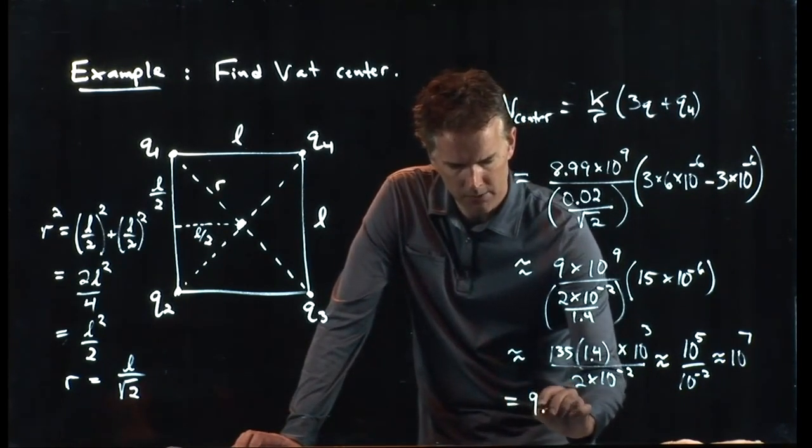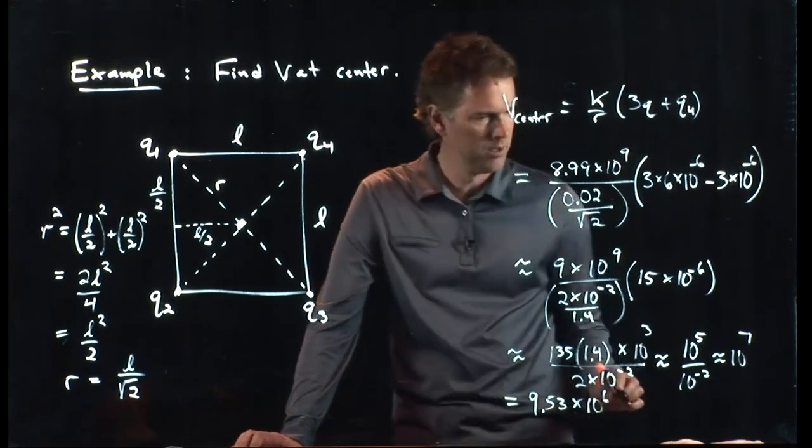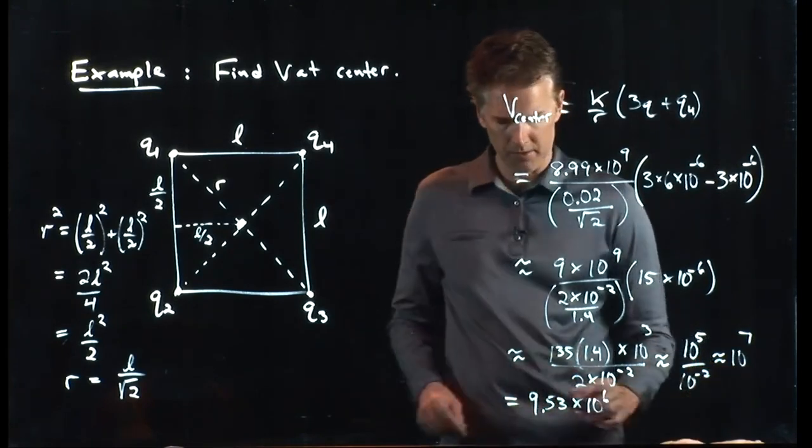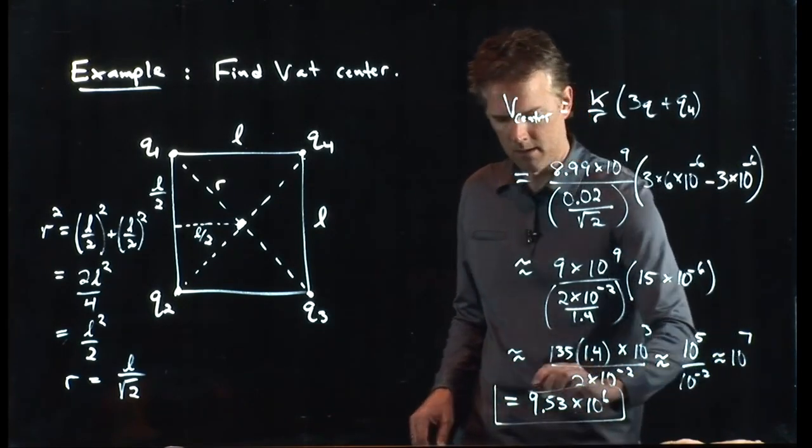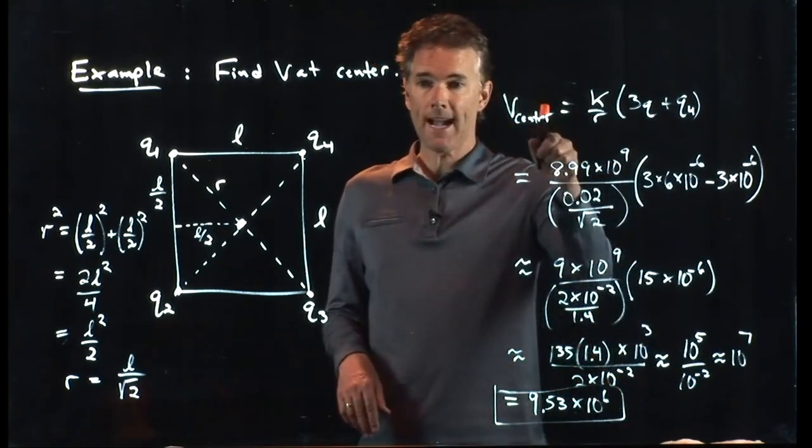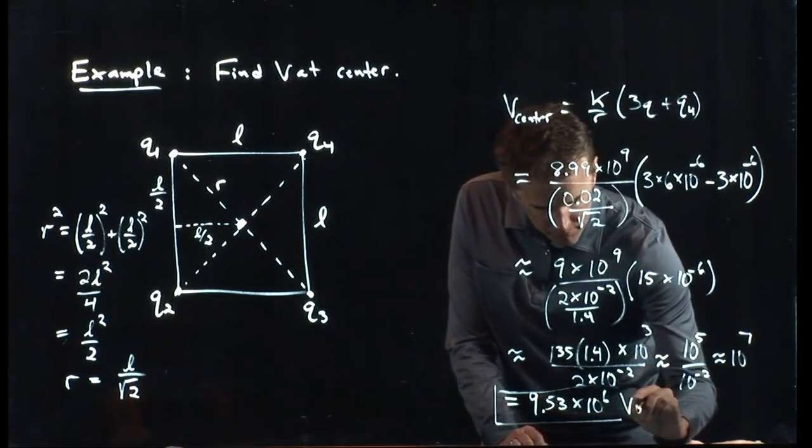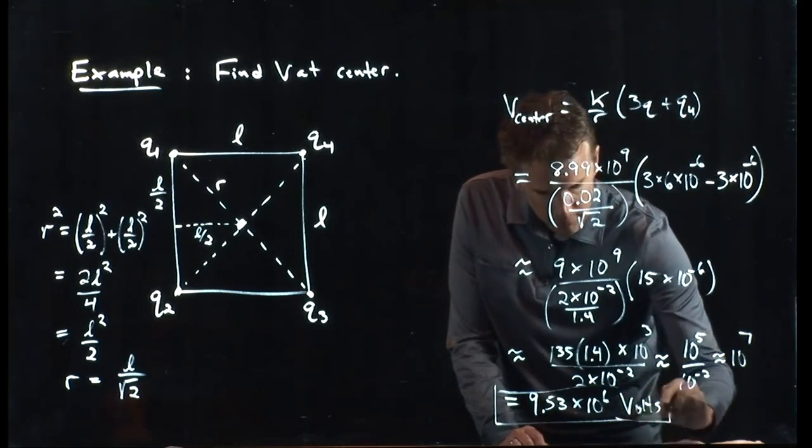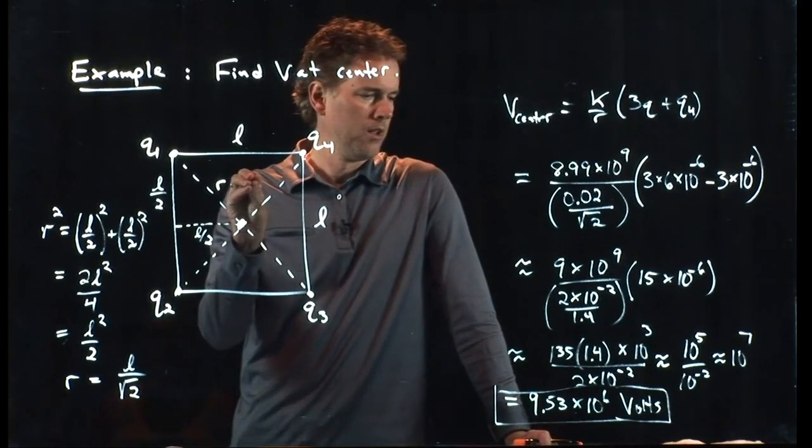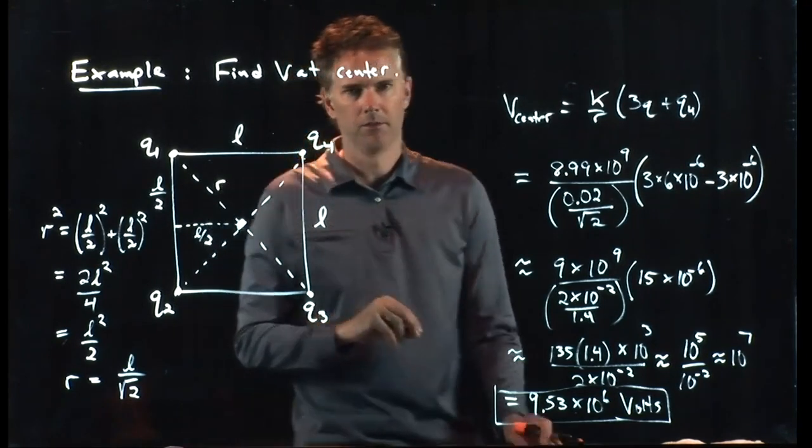So the actual answer is 9.53 times 10 to the 6, which is pretty close to our guess, because this is almost 10 and that would make this thing 10 to the 7. 9.53 times 10 to the 6. And we're asking about V. V is volts. There is 9.53 times 10 to the 6 volts at the center of this square.